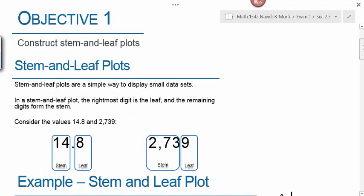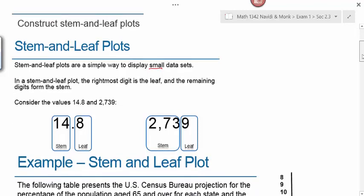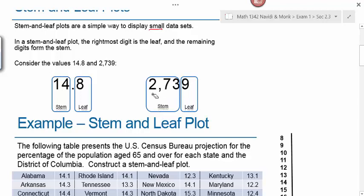Objective one is to construct a stem and leaf plot. Stem and leaf plots are a simple way to display small data sets — the key word is small, because they don't work well for large data sets and can get quite cumbersome. In a stem and leaf plot, the rightmost digit is the leaf and the remaining digits form the stem. For example, in 14.8 the stem is 14 and the leaf is 8; in 2739 the stem is 273 and the leaf is 9.